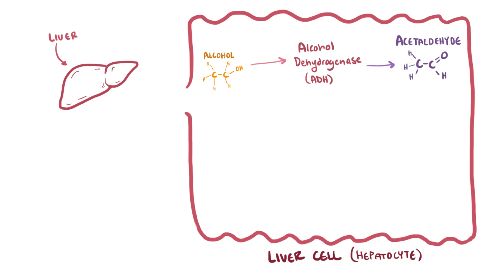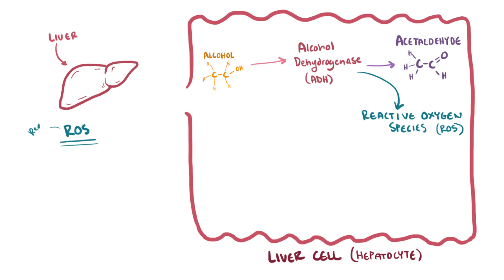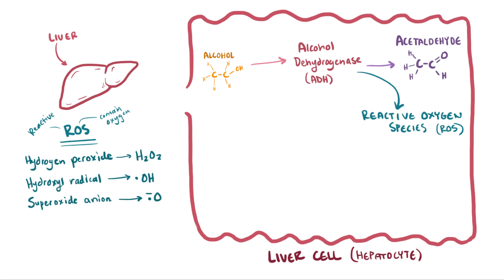Looking back at our pathways, when you make acetaldehyde from ethanol, you also start to generate these ominous-sounding compounds called reactive oxygen species. These are super reactive and contain oxygen — some examples are hydrogen peroxide, the hydroxyl radical, or the superoxide anion. These reactive oxygen species react with different components of the hepatocyte, like proteins and even DNA, and this process can cause serious damage to the cells.